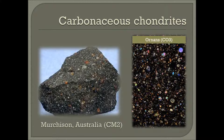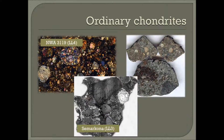The ordinary class has one clan consisting of three groups — H, L, and LL — based on the ratio of metallic iron to oxidized iron. Ordinary chondrites constitute about 85% of observed meteorite falls.